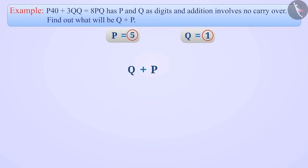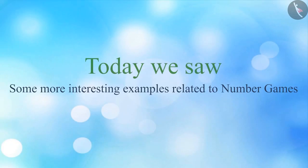Now, we will add the value of q to the value of p. The value of q is 1 and the value of p is 5. The sum gives us 6. That is, q plus p equals 6. So today we saw some interesting examples related to number games.